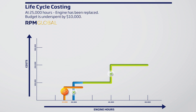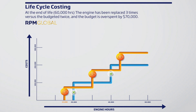Looking at this graphical example, the assumption is that there will only be two major replacements. However, the reality of the situation is that it takes just one early failure at the 15,000 hour mark to cause three engine change-outs within this asset's lifetime.